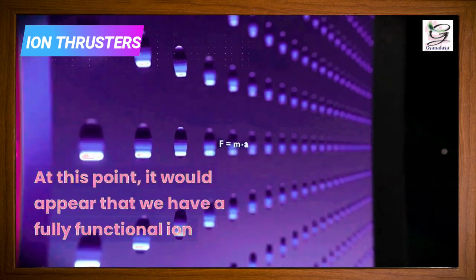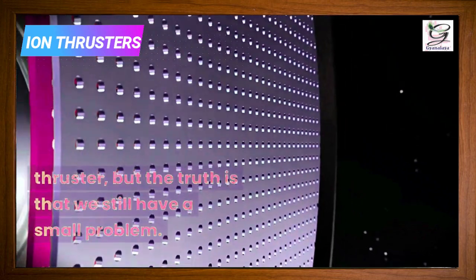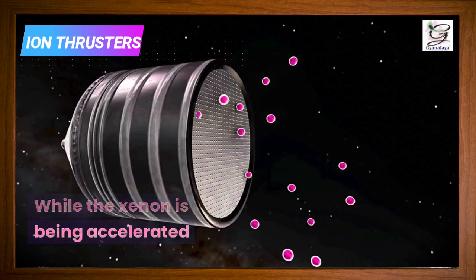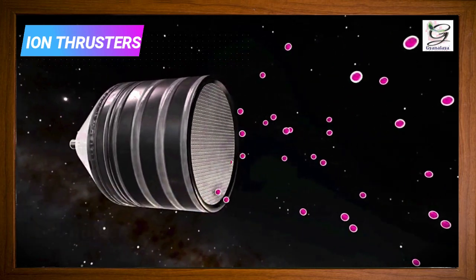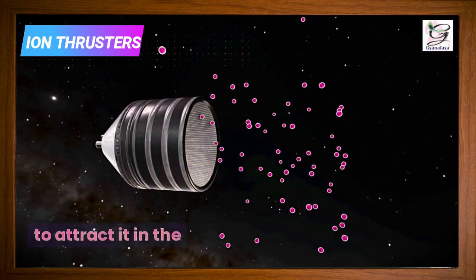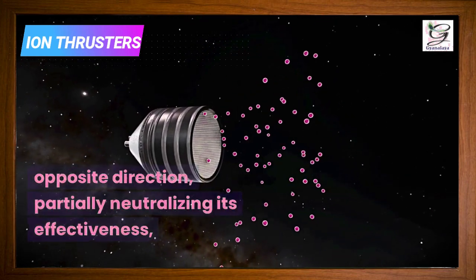At this point it would appear that we have a fully functional ion thruster, but the truth is that we still have a small problem. While the xenon is being accelerated when it is between the two grids, once it passes through the second grid, the second grid will begin to attract it in the opposite direction, partially neutralizing its effectiveness.